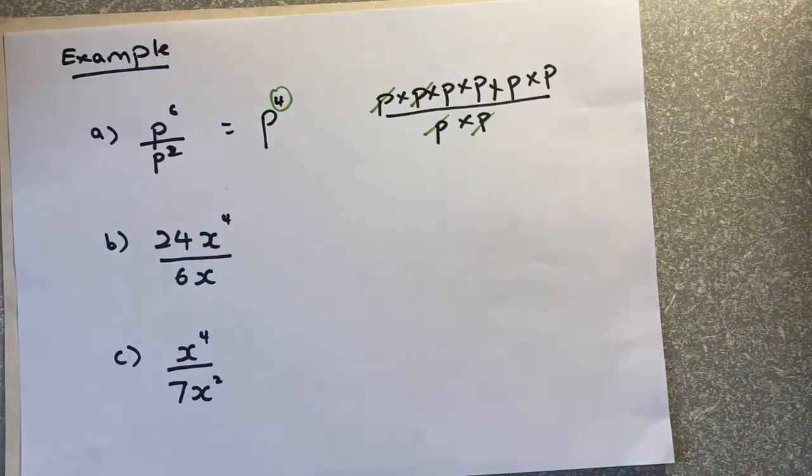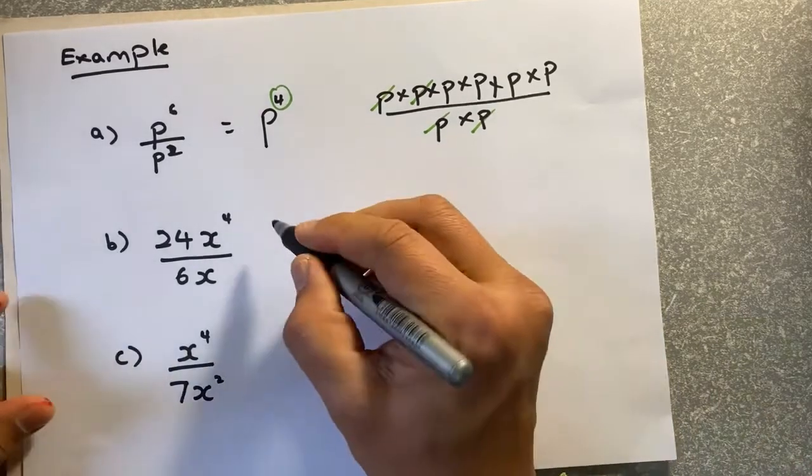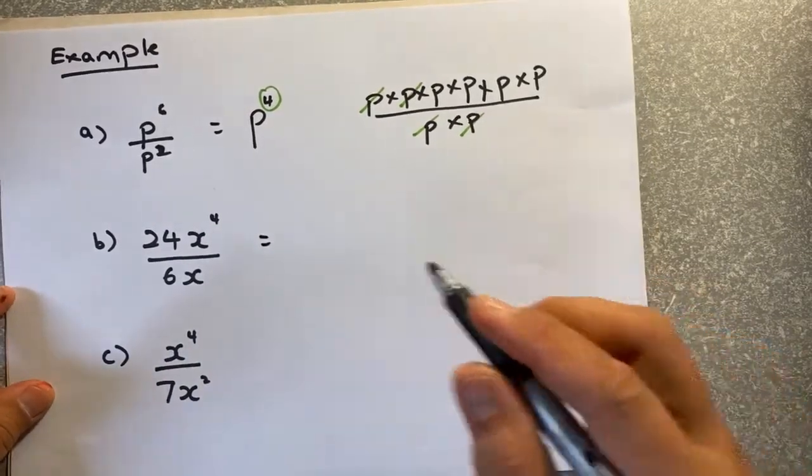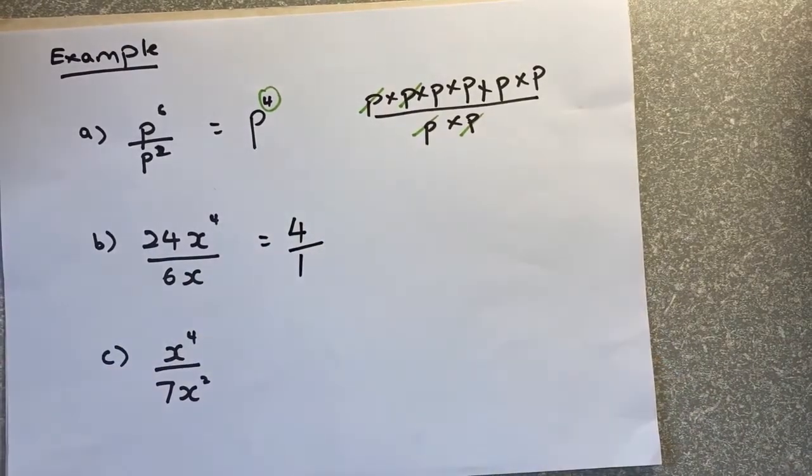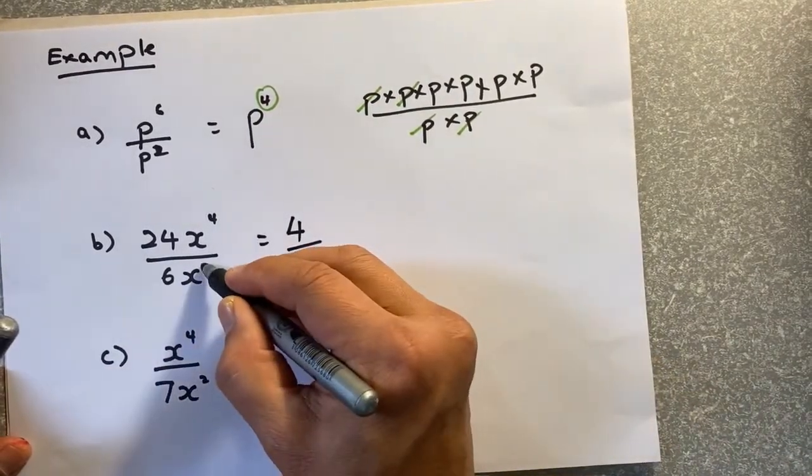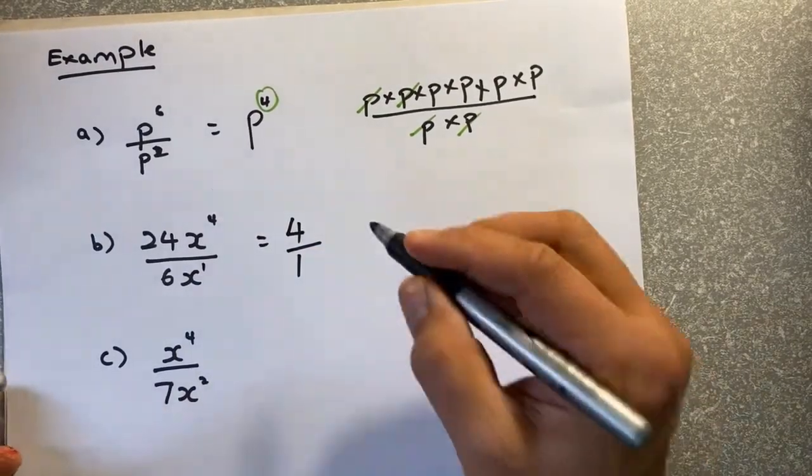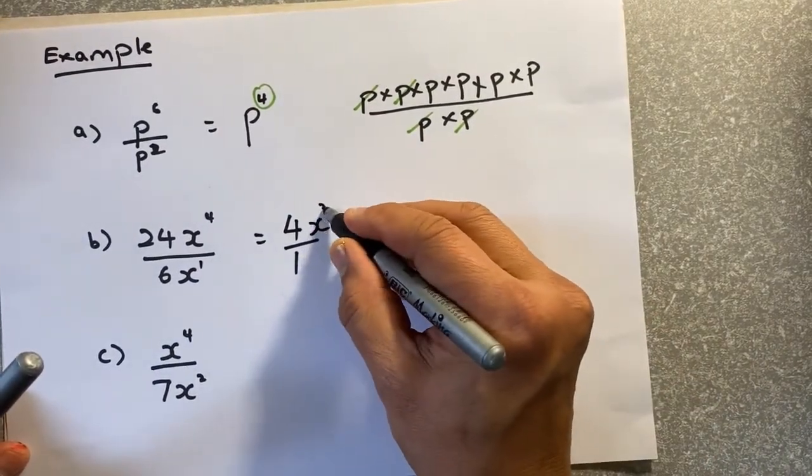Next one. 24. Again, number divided by number. Put in your calculator. 24 divided by 6 is actually 4 over 1, or 4 will be fine. Then the power x4 divided by x. There's no power, it's 1. So 4 minus 1 is 3. So 4x cubed.